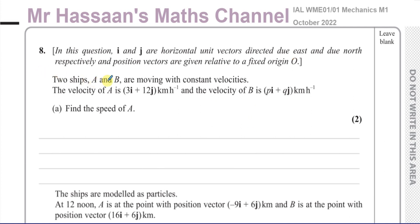It says two ships A and B are moving with constant velocities. The velocity of A is 3i + 12j kilometres per hour, and the velocity of B is pi + qj kilometres per hour. We've got to first of all find the speed of A.